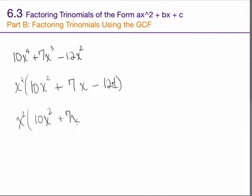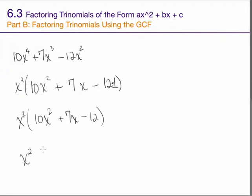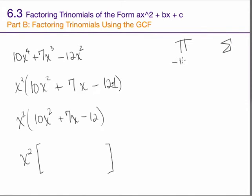12 times 1 is 12. Now that I've found the greatest common factor, I need to factor this into the factored form. I'll write down the greatest common factor — x squared — so I don't forget it; it's still part of the expression. Then I'll do my work factoring the trinomial inside the parentheses. The first step, once you've pulled out the GCF, is to figure out your product and sum. My product is 10 times negative 12, which is negative 120, and my sum is 7.